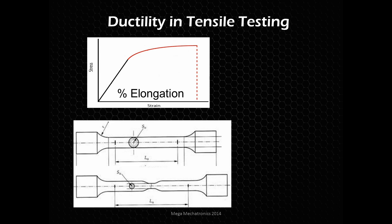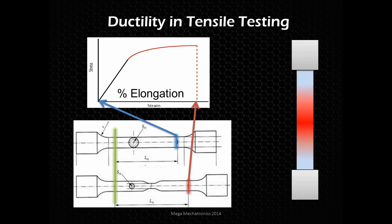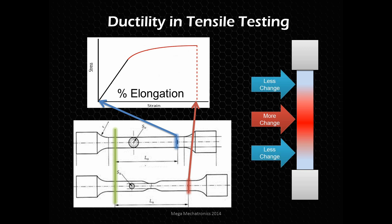We can derive a good idea of ductility from our tensile test. We start with a strain of zero and pull it across until the breaking point. The percent elongation is the maximum strain taken from the stress-strain curve. But it's not a perfect measurement because it depends on the initial length — there's more change in the middle where it fractures than on the outside.